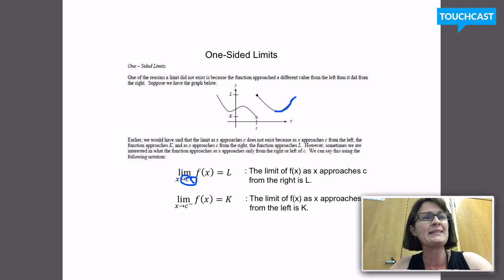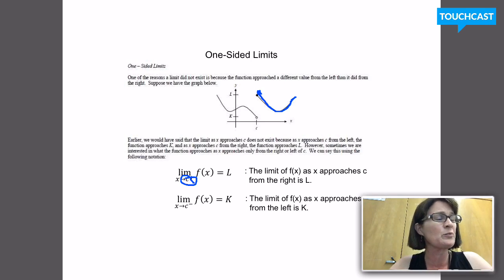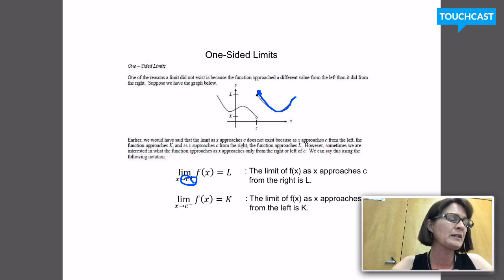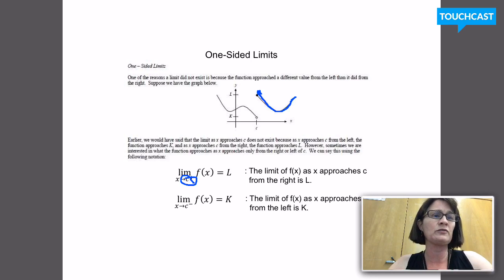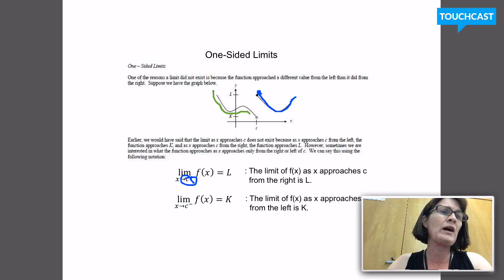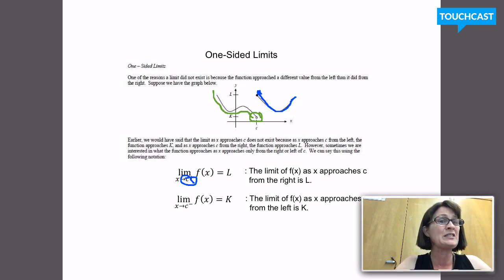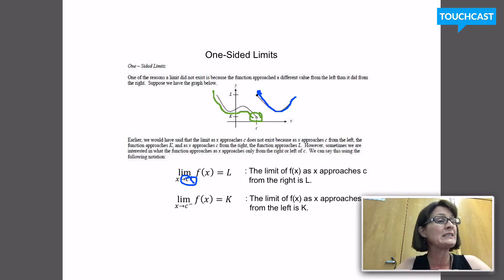Because if I were walking along this function starting on the right-hand side, what y value do I think I'm going to get to if I stop at the place where x equals c? It looks like I'm going to reach a y value of l. And we can notice there's actually a different answer you would get if you walked along this function starting from the left-hand side — it seems like the y value you would approach would be k. So I would say the limit of f of x as x approaches c from the left is k.